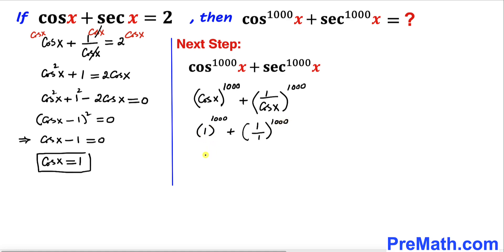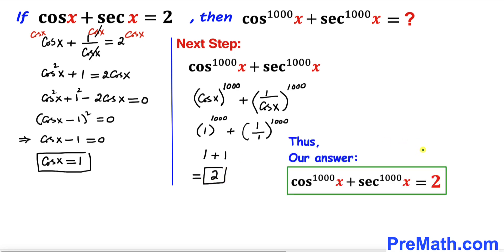1 to the power 1000 is 1, and 1 divided by 1 to the power 1000 is also 1. So the whole expression simplifies to 2. Our final simplified answer is 2. Thanks for watching and please don't forget to subscribe to my channel for more exciting videos.